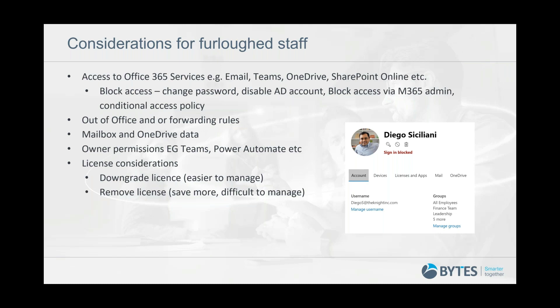Generally, if you're furloughing staff, you'd want to block access so they shouldn't be working. To do that, depending on whether you're syncing your AD on-premises into Office 365, the quickest way to block access would be to change the user's password and disable that AD account on-premises, which would sync to Office 365 or Azure AD and prevent that user signing into any Office 365 services. Changing the password is more immediate, because just disabling the account on-prem could take a couple of minutes for the delta sync from Azure AD Connect to block sign-in.